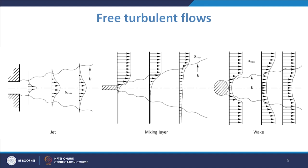That can be understood through the example of these three kinds of flows. For the jet flow, you have a very high-speed jet coming in with interaction with the stationary fluid on the sides, giving a characteristic velocity profile. In the case of a mixing layer, a slow-moving region interacts with a fast-moving one and the velocity profile develops accordingly. Similarly, for the wake, you see how the velocity profile changes in that configuration.